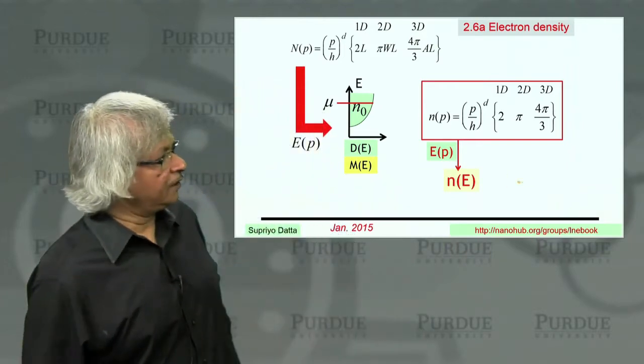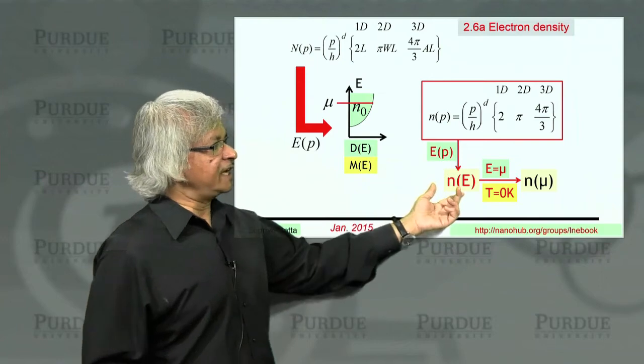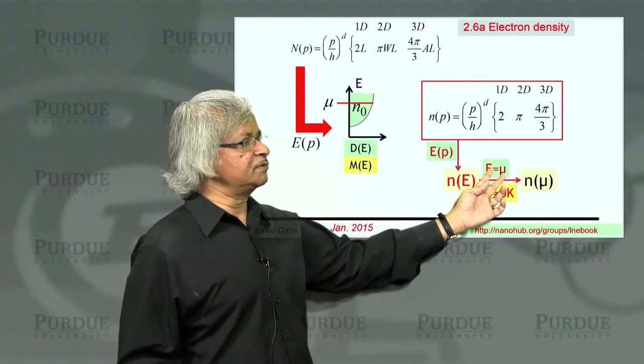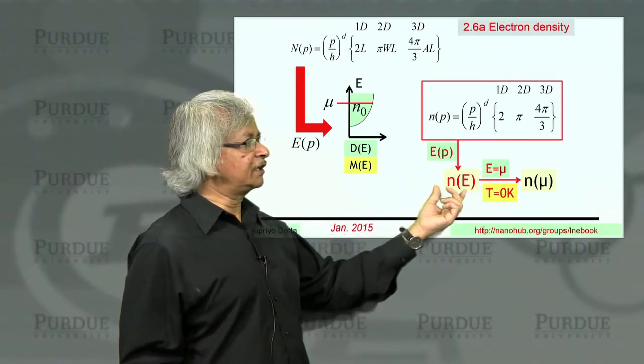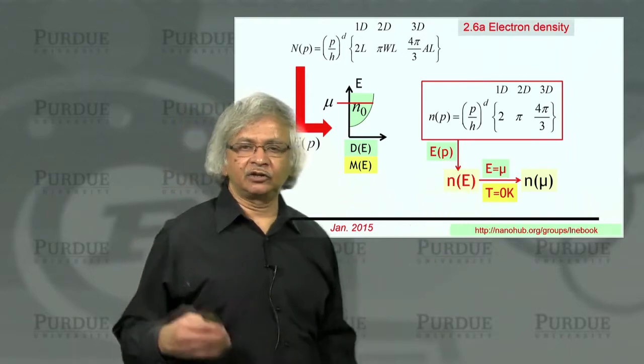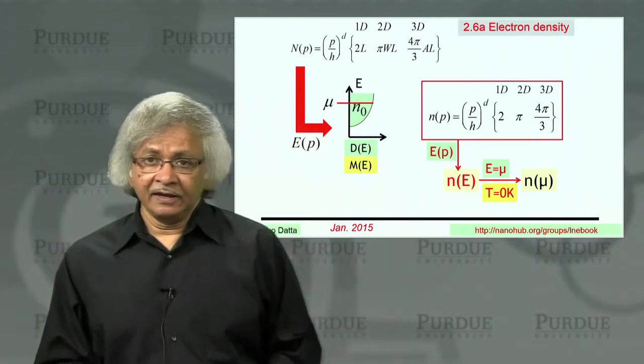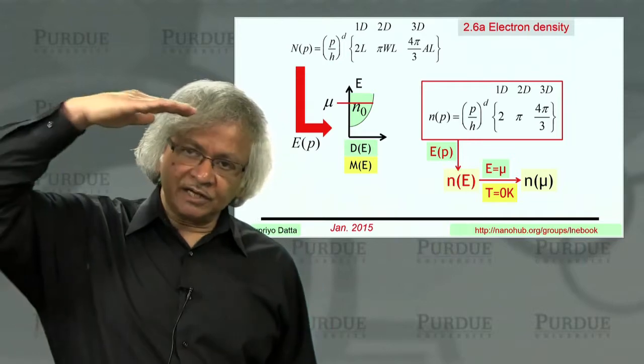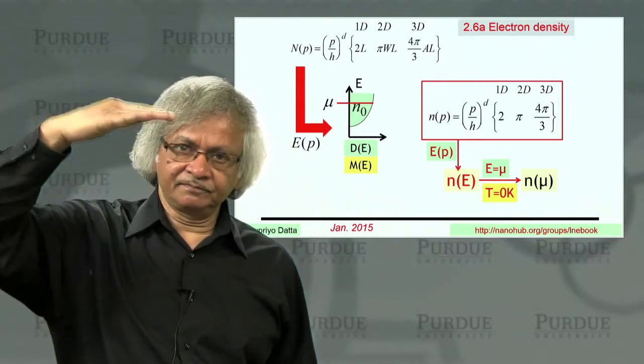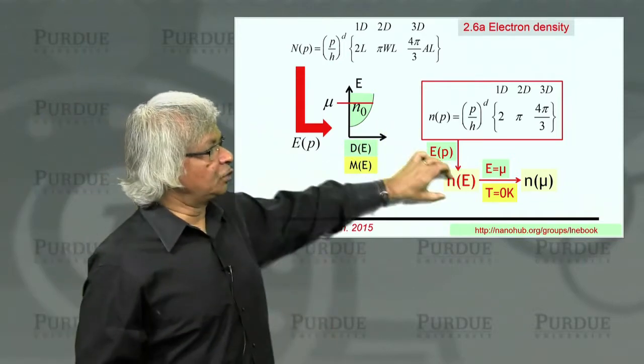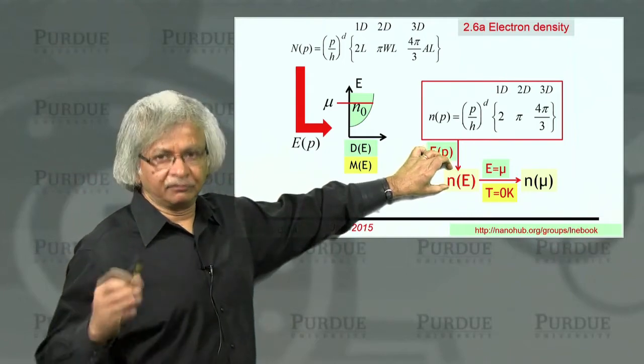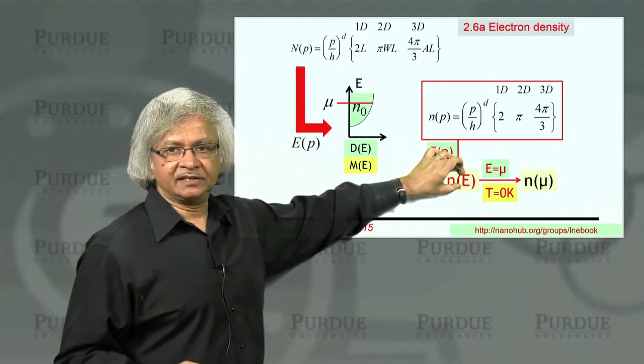And then at 0 Kelvin, of course, all the states below E equals mu are filled. So what does this function tell you? Well, it tells you the electron density you'd have if all states were filled up to E, because this tells you the total number of states per unit volume that you have whose energy is less than E.